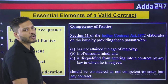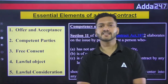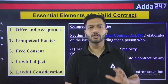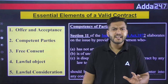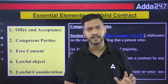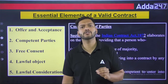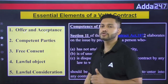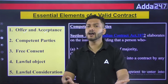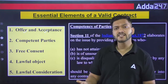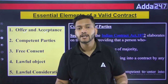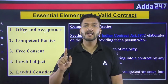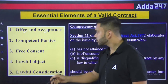Now we come to the essentials of a valid contract under Section 10. For a contract to be valid in the eyes of the law, certain basic elements must be present. First, there must be an offer and acceptance. Without an offer, there can be no acceptance; without acceptance, no promise; without a promise, no agreement; and thus no contract. So the very first step is that there must be an offer and an acceptance.